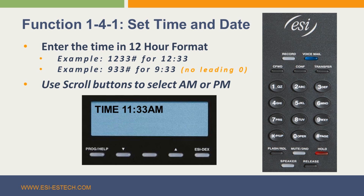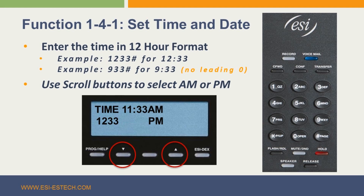An example would be to enter 1233 pound for 12:33, or 933 pound for 9:33. Note, you do not need a leading zero for the time. Once you have pressed pound, you will then select AM or PM by pressing the scroll key under the display, and then press pound.